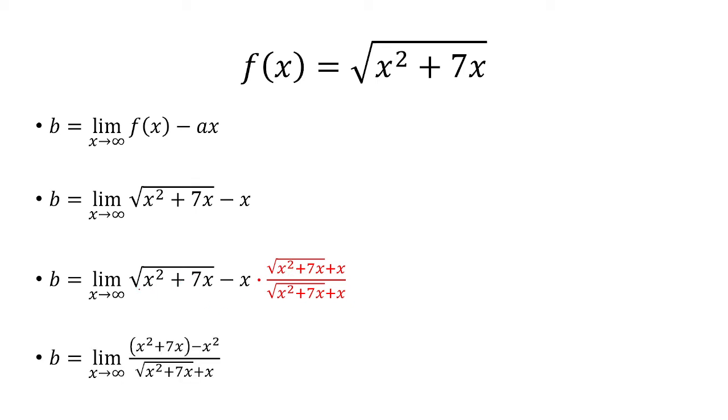Here we have a difference of two squares. So, you have basically a minus b times a plus b, and that gives us a squared minus b squared. a is the square root of x squared plus 7x. So, when you square that, the square root goes away. Then minus, and then x squared. The x squares are going to cancel, and I'm just going to have 7x at the top.